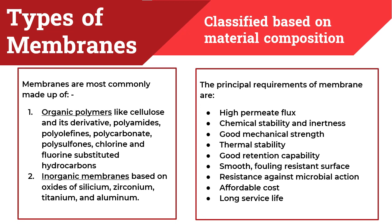Coming to the types of membranes, we have two types: organic polymers and inorganic polymers. In organic polymers, the materials used are cellulose and its derivatives, polyamides, polyolefins, polycarbonate, polysulfones, and chlorine and fluorine substituted hydrocarbons. In inorganic membranes, we have materials based on oxides of silicon, zirconium, titanium, and aluminium.